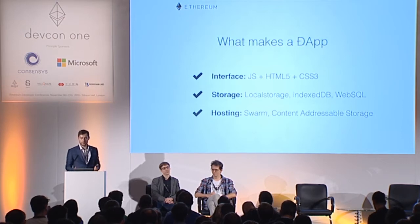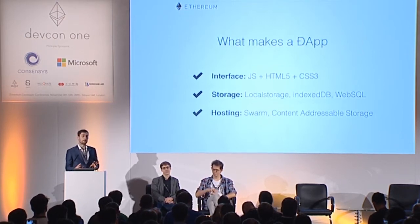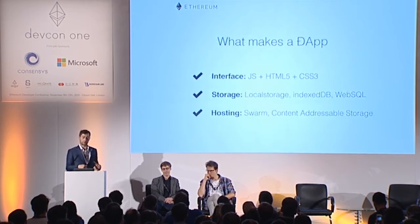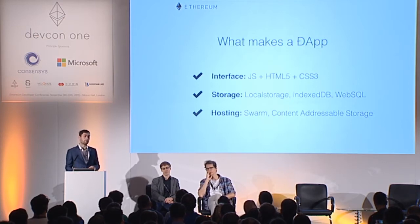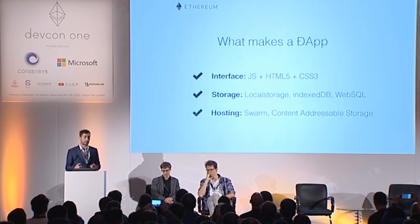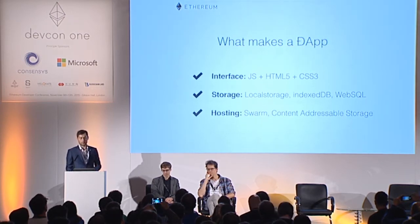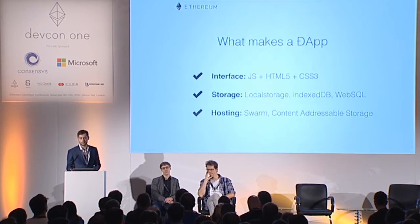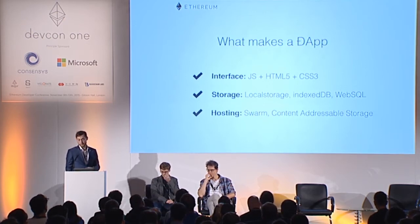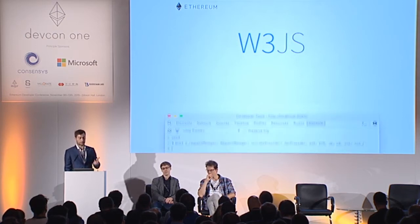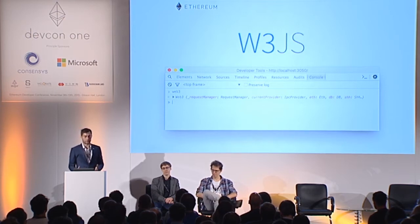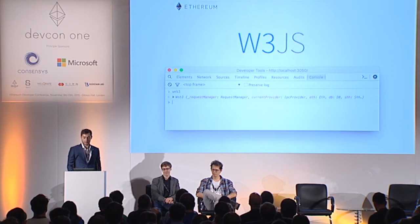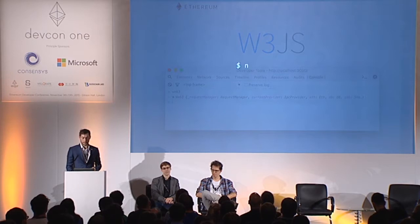What basically makes it a dApp? The main three components: first, an interface built in JavaScript, HTML5, and CSS; second, it has local storage so the data is kept locally — could be localStorage, the browser's IndexedDB, or Web SQL; and it comes from a place where you can verify the data is exactly what it's supposed to be, like Swarm or IPFS — any kind of content-addressable storage. And obviously it needs access to the Ethereum blockchain, which is what we deliver via the web3 object — basically the API for JavaScript applications to interact with a blockchain.